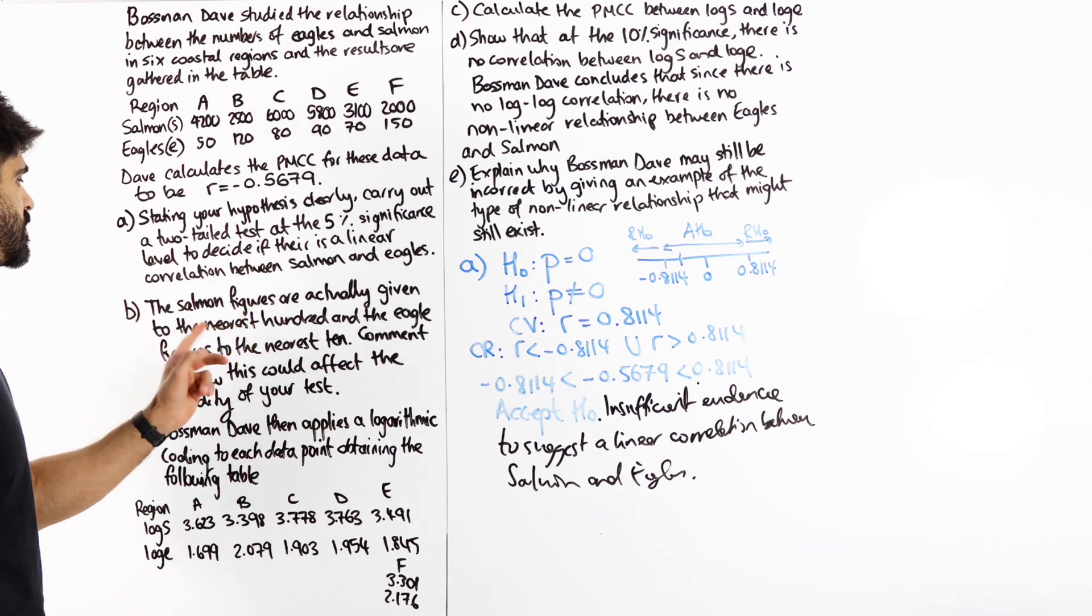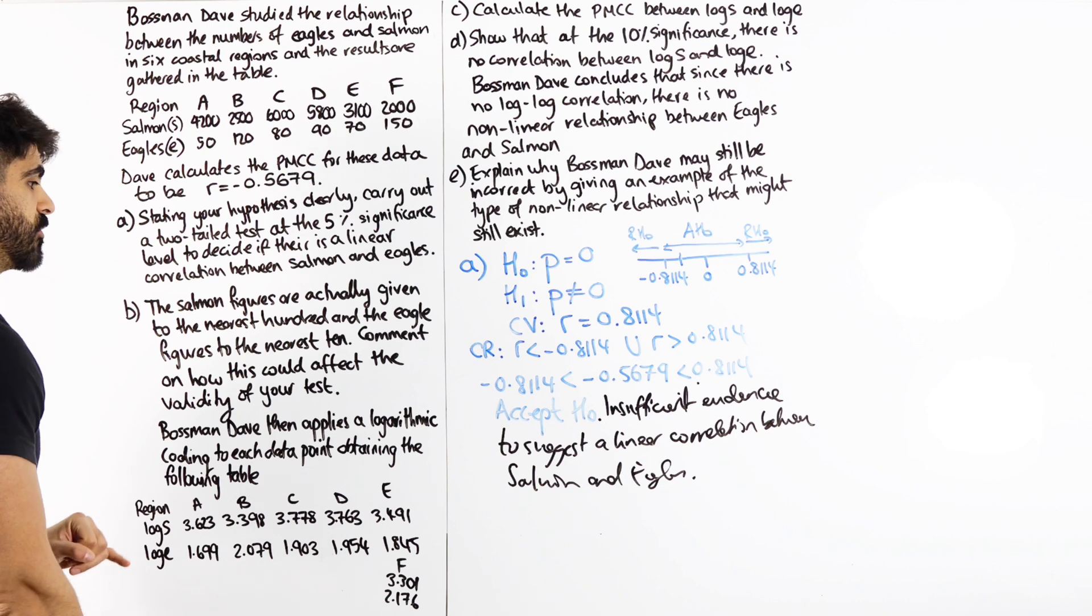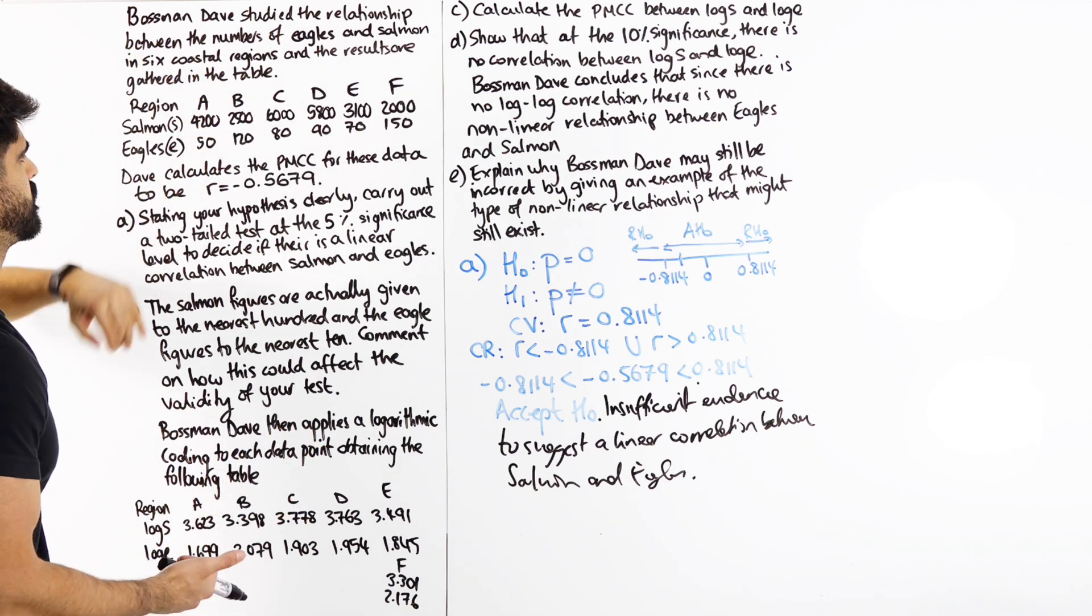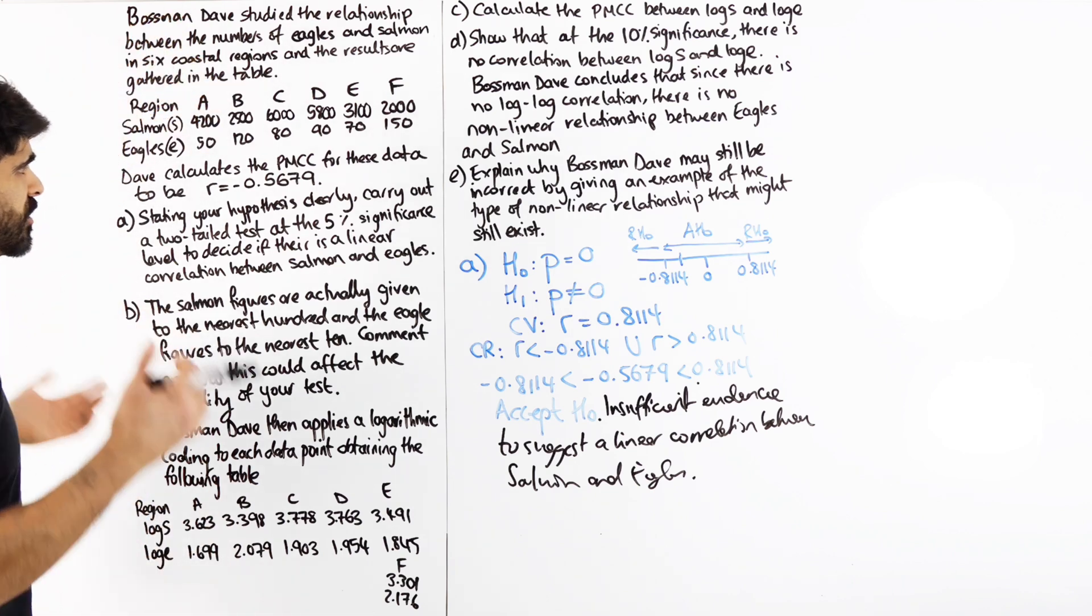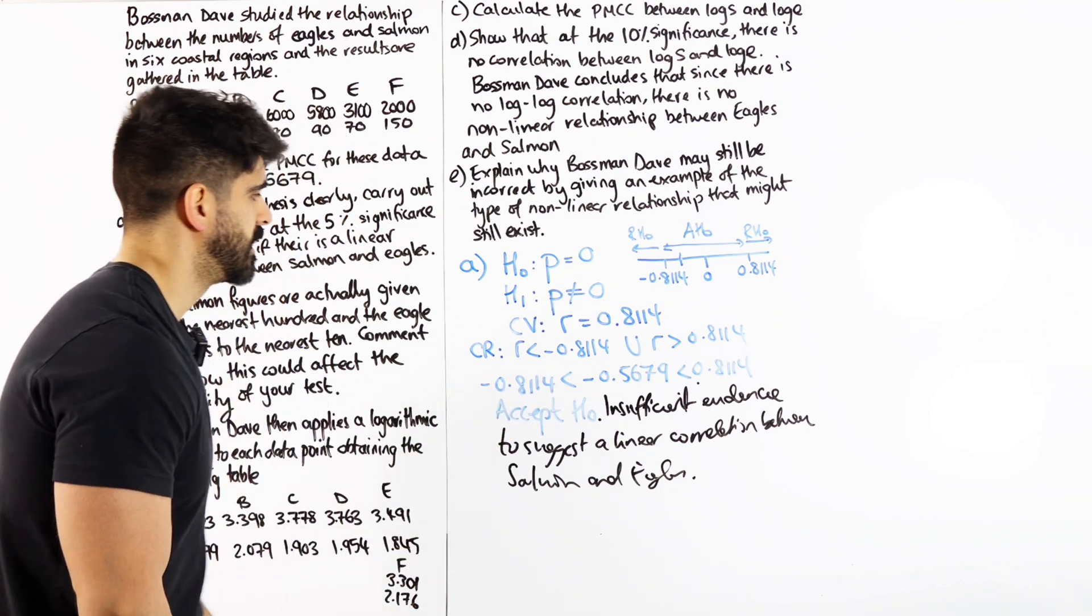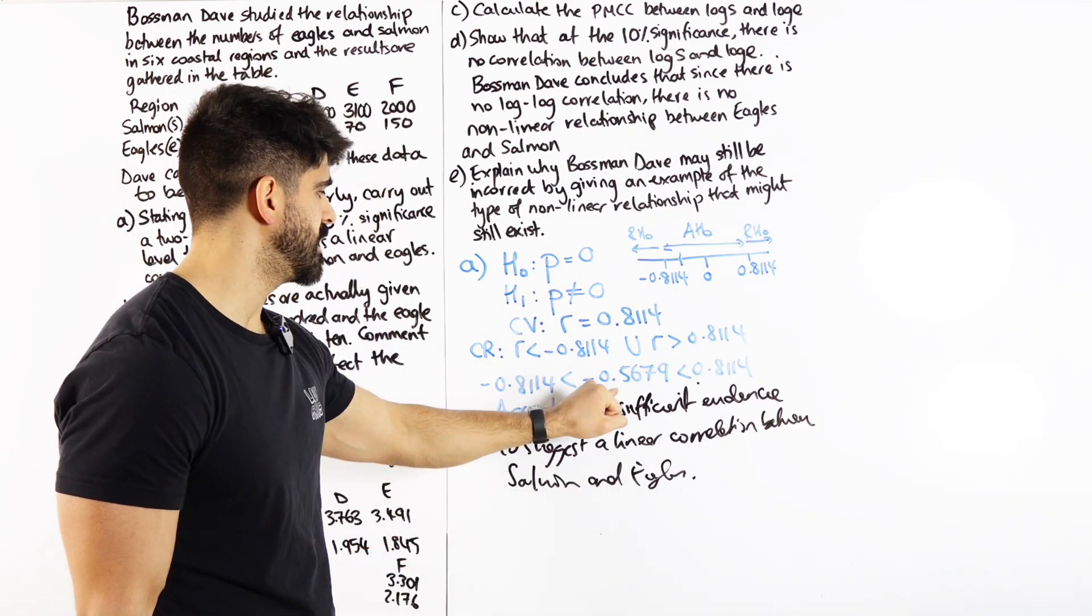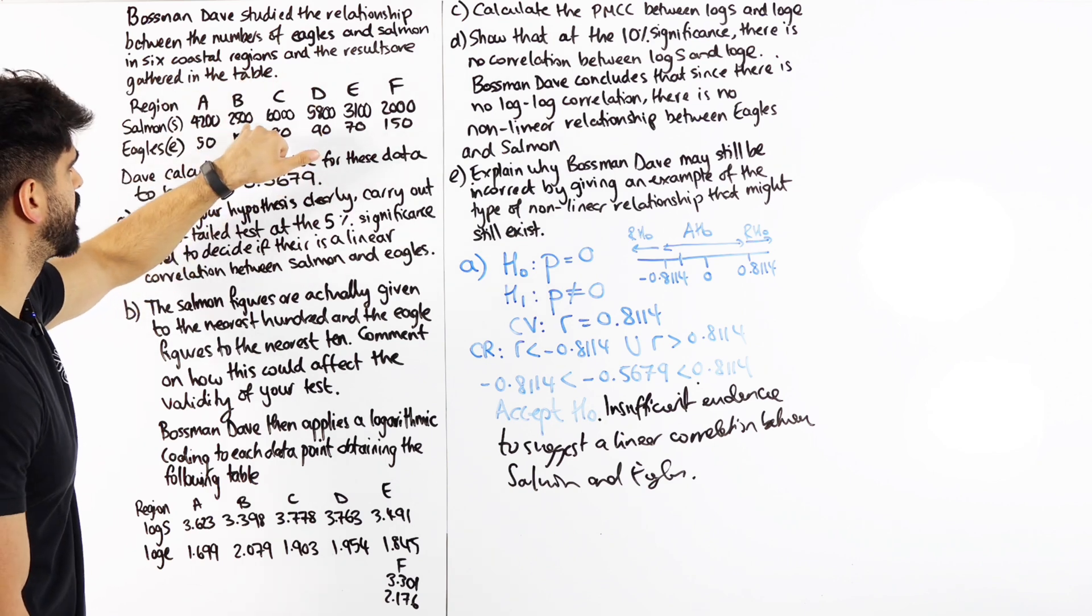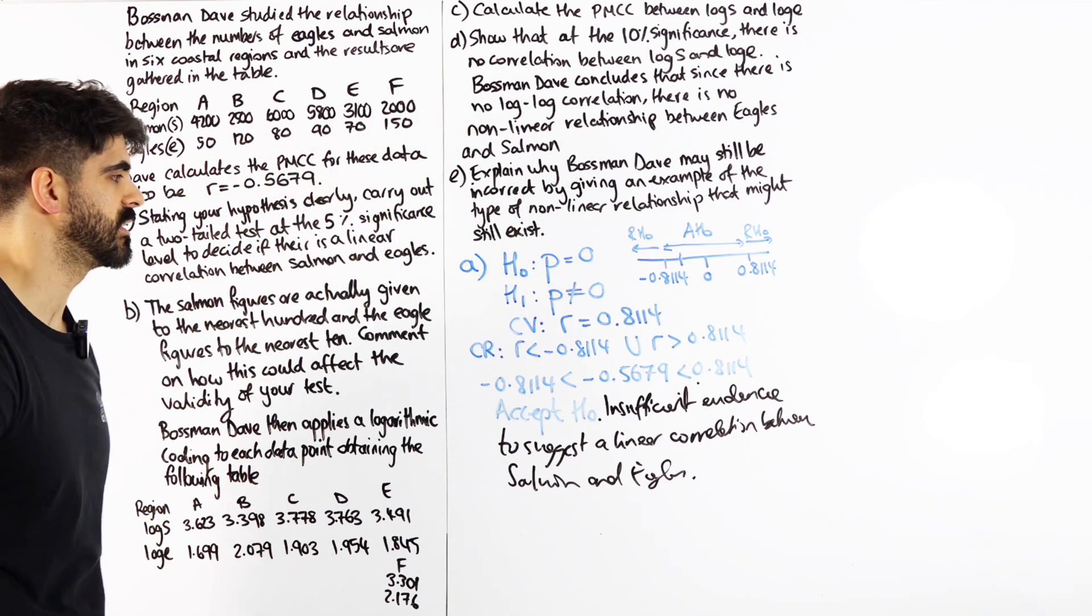Part B says the salmon figures are actually given to the nearest 100 and the eagle figures to the nearest 10. Comment on how this could affect the validity of your test. So if the salmon figures are rounded to the nearest 100, this could go up to 4250 and down to 4150 and this could go up to 2550 and 2450 et cetera. The question is how could all of these varied numbers potentially affect the outcome of our test? In the exam, most likely they'll accept both perspectives, but from my perspective, this is quite far away from this. 50 with regards to all of these numbers is very small percentage-wise.